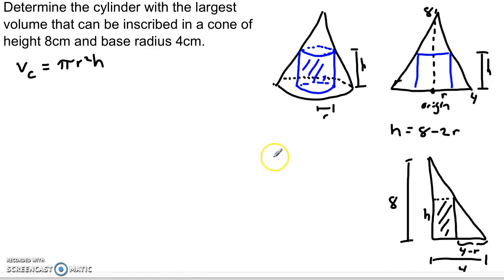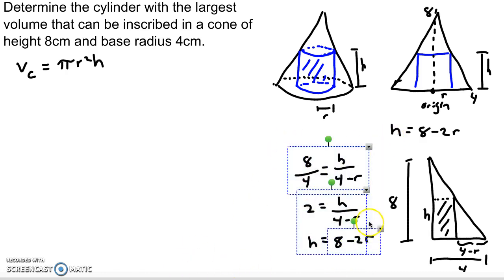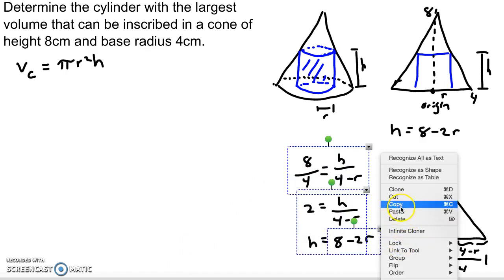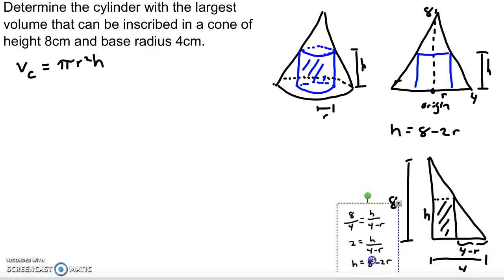And we can set up a proportion. These are similar triangles. We could say eight over four equals h over four minus r. That's coming from eight over four equals h, this height, over four minus r. And then eight over four is just two, so this is two equals h over four minus r, which means if we cross multiply here, eight minus two r. And that is exactly the same thing as we had there. So it doesn't matter which way you set this up, whatever is more comfortable for you. What's important is that you have to figure out the relationship between those two variables so that you can eliminate one from the first equation.